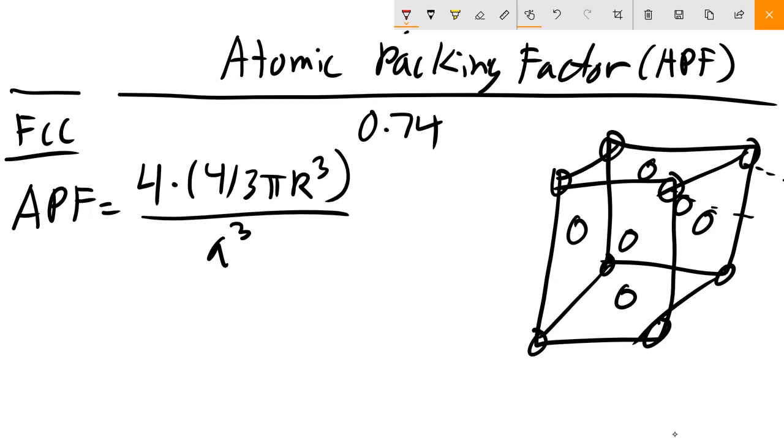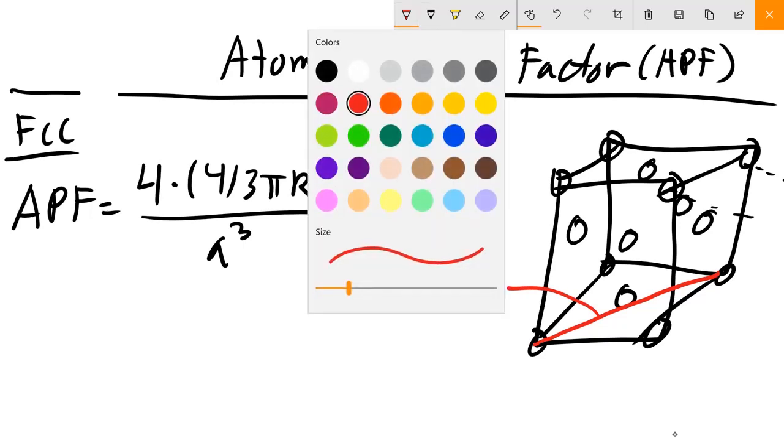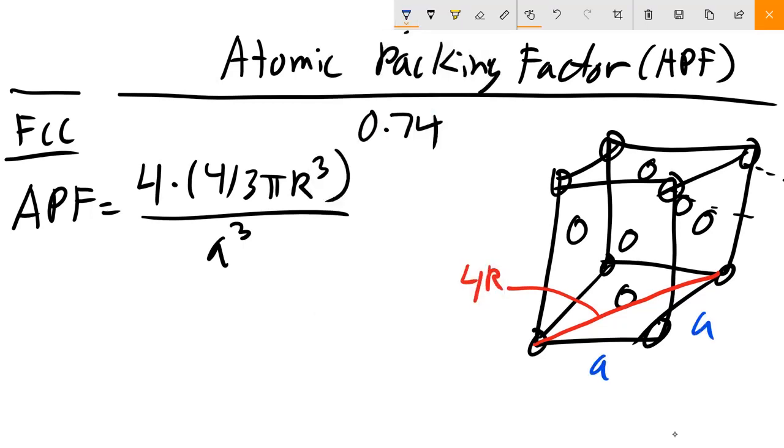Per our usual a cubed here. What's unique about FCC is that now this distance here is 4R. We know that this is a and a, so we know that 2a squared equals 16R squared. So we can write that a equals 2R root 2.